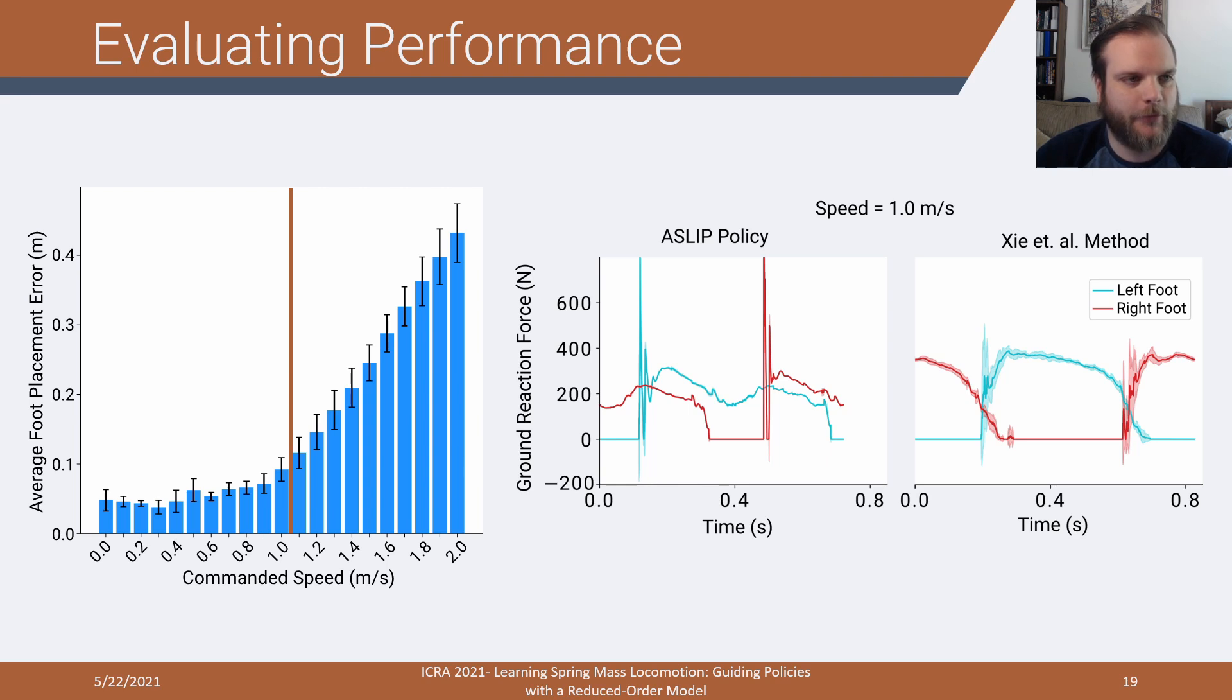One other interesting feature is that we see the ground reaction forces for our policy compared to comparable previous work on Cassie. What we see is this characteristic double hump ground reaction forces, which shows up in the model motions and is a very common feature of spring mass walking. It's cool to see that appear here, which tells us something about the dynamics of the model are transferred.